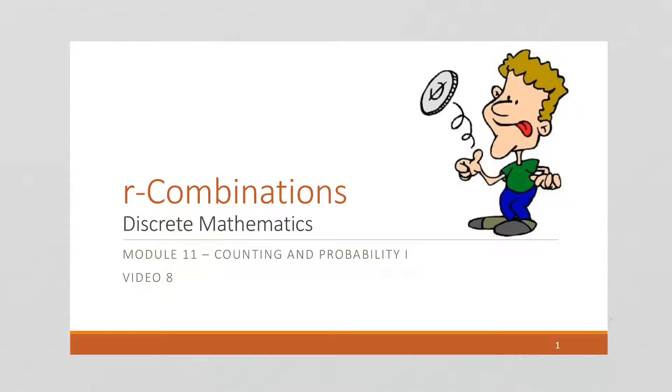In this video, we're going to talk about combinations. The important difference between permutations and combinations is that with permutations, order matters. If I'm choosing people for certain roles in a play, the first person I choose is going to be the lead role. The order I choose people is going to matter. It's going to be important.